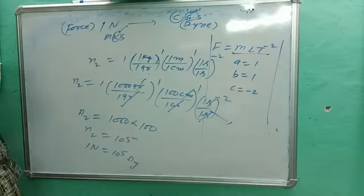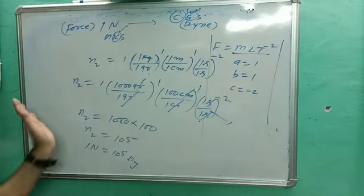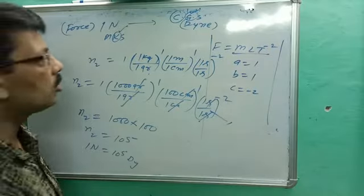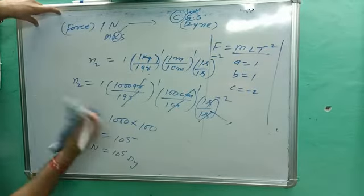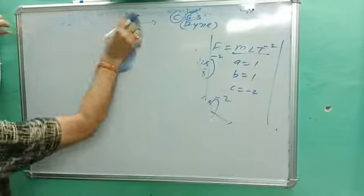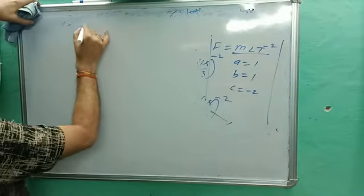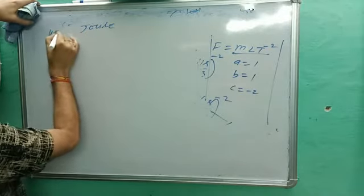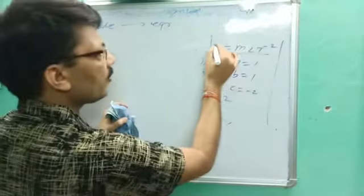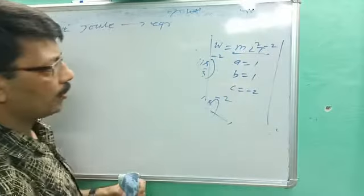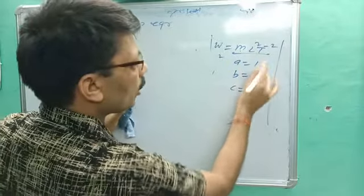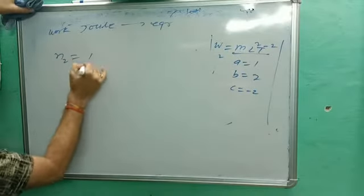This is the application of dimensional formula — converting one system into another system. Now one more example: convert 1 joule of work into the CGS system, which is erg. The dimensional formula for work is W = M¹ L² T⁻². Comparing powers: a = 1, b = 2, c = −2.